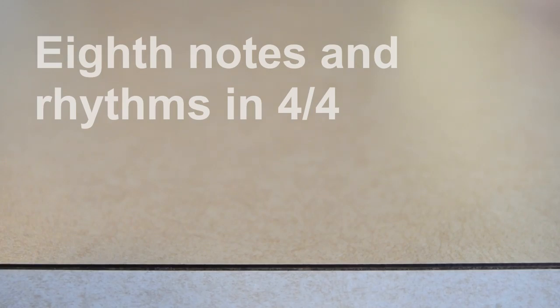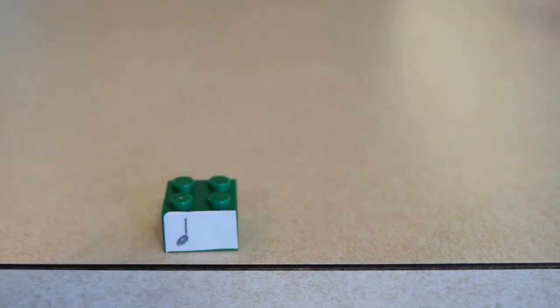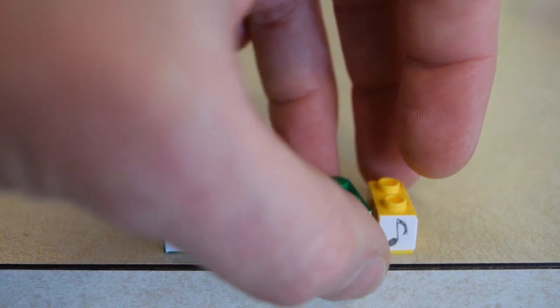So we've shown how quarter notes can be added together to make notes that are longer values. Let's talk about going the opposite direction into the shorter note values with eighth notes. So again, we've got our single quarter note, and if we cut that in half, we end up with two eighth notes.